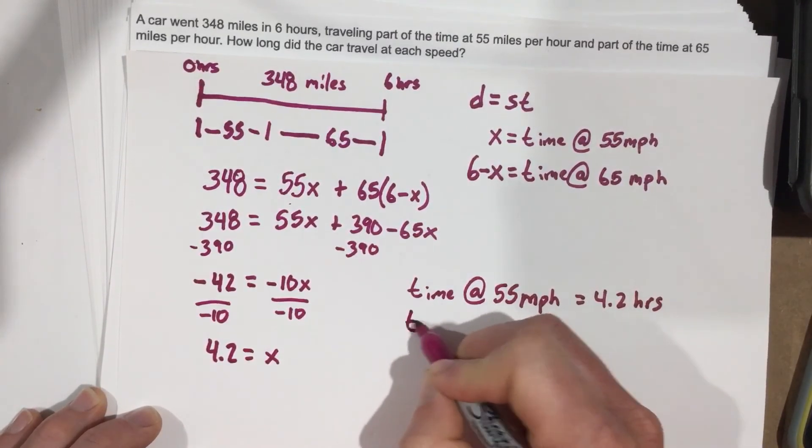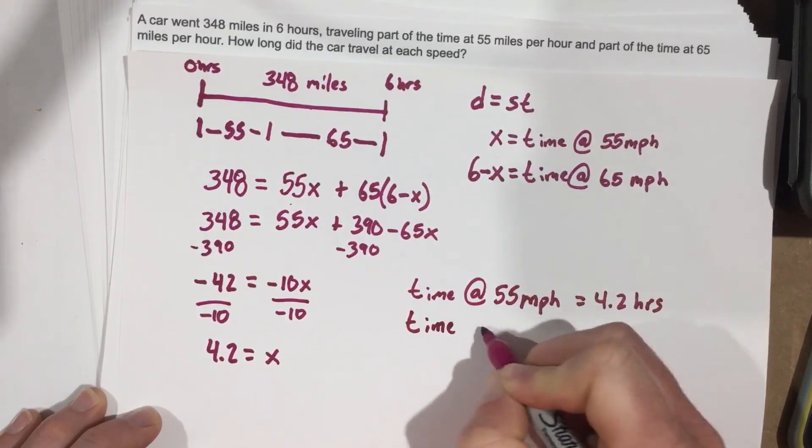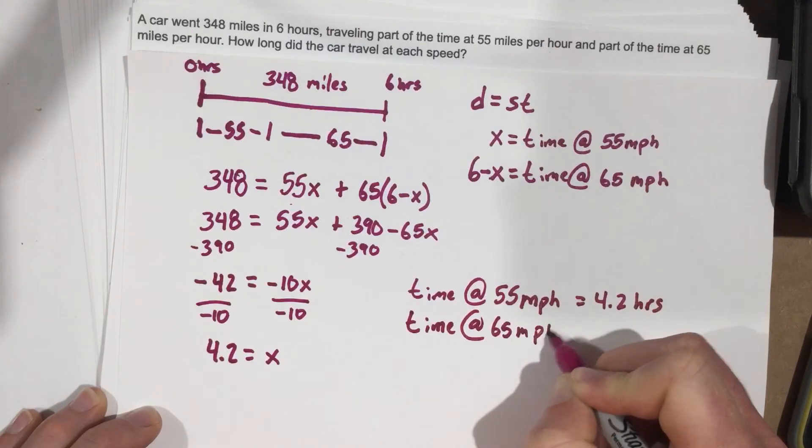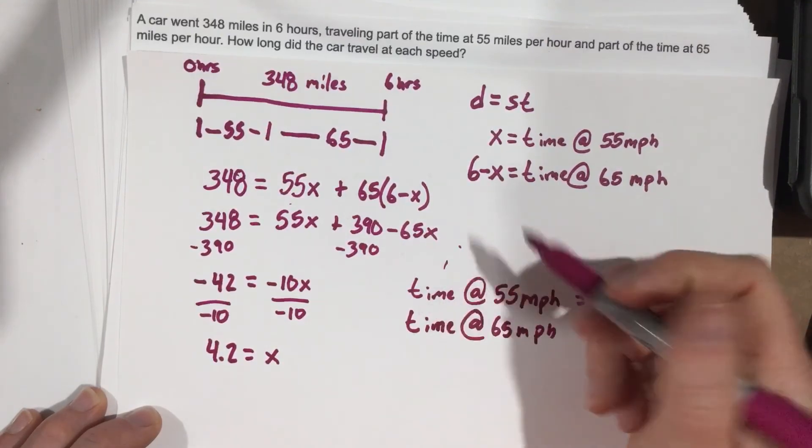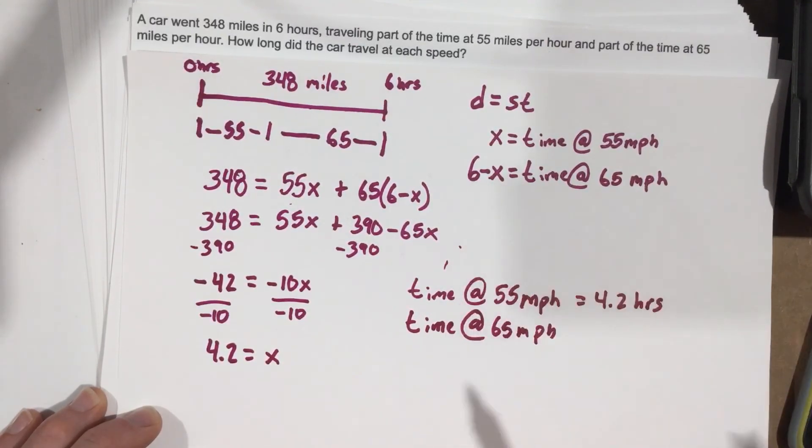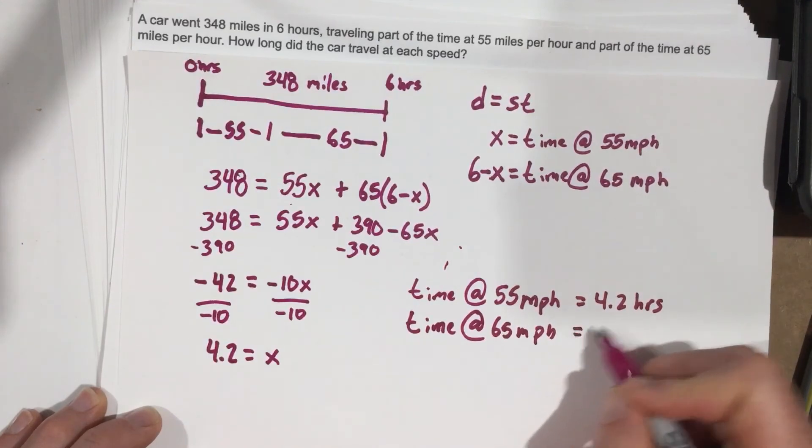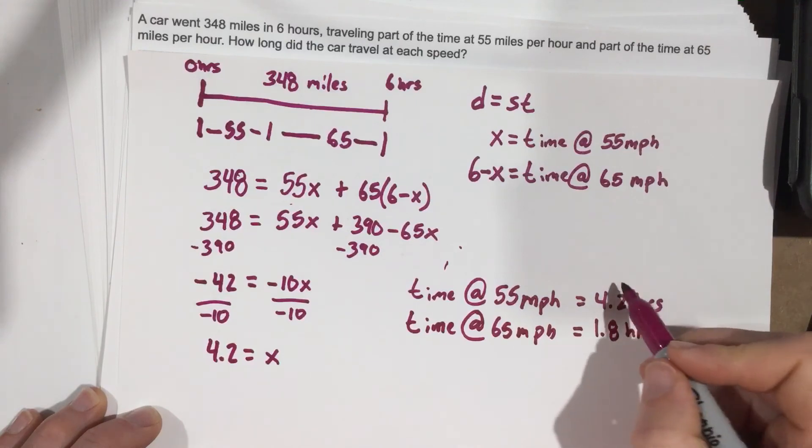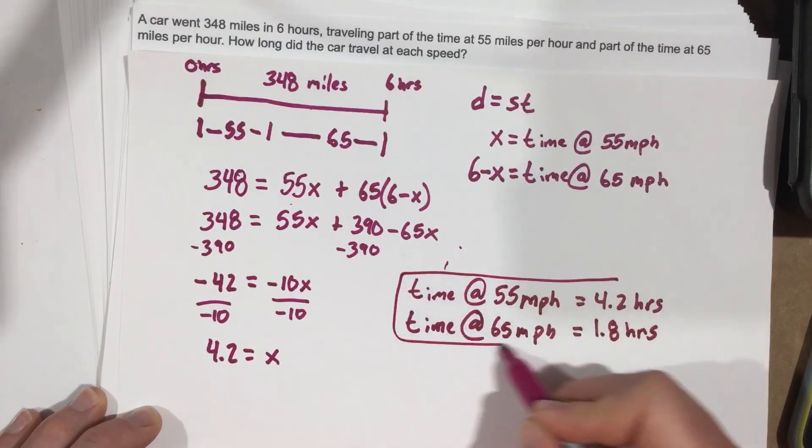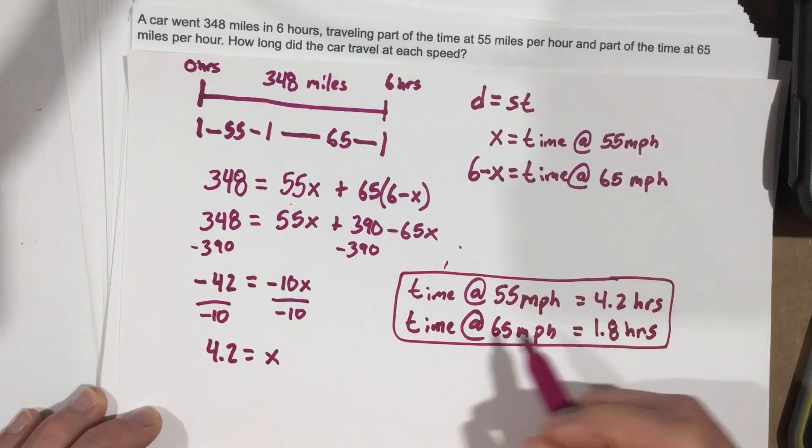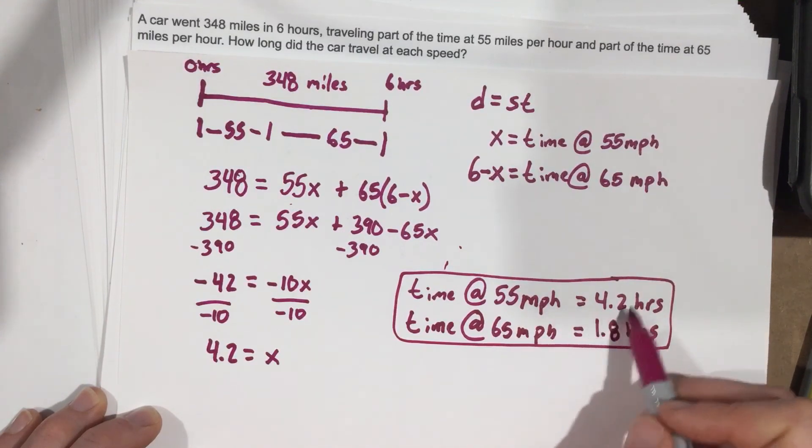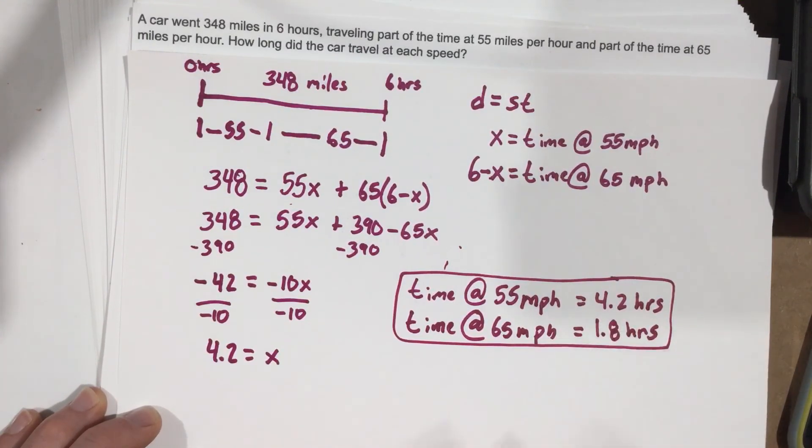And that means that our time at 65, well, we know that's the total time, which is 6 minus that time, well, 6 minus 4.2 is 1.8 hours. And so on this trip of 348 miles, this person drove 55 miles per hour for 4.2 hours and 65 for 1.8 hours.